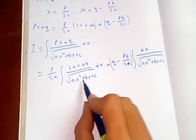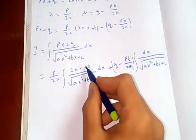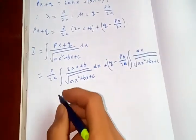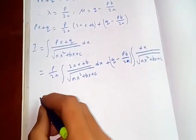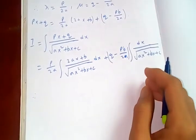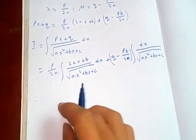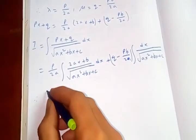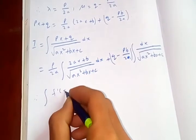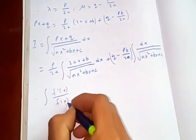Now, since if you differentiate this denominator, then you get the upper one, right? Using integration by substitution, then is integration of f prime of x over f of x dx.